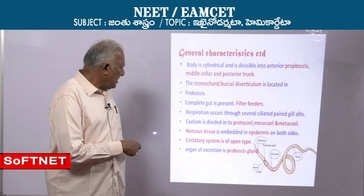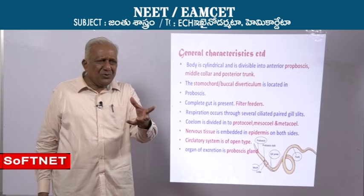The nervous system is embedded in the epidermis. Here you don't find a distinct brain. You cannot say there is a dorsal tubular nerve cord either — it is embedded in the epidermis on the upper and lower sides.